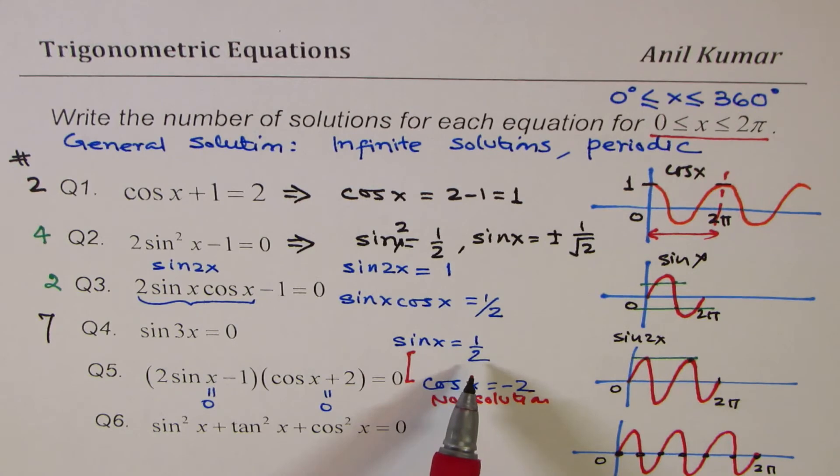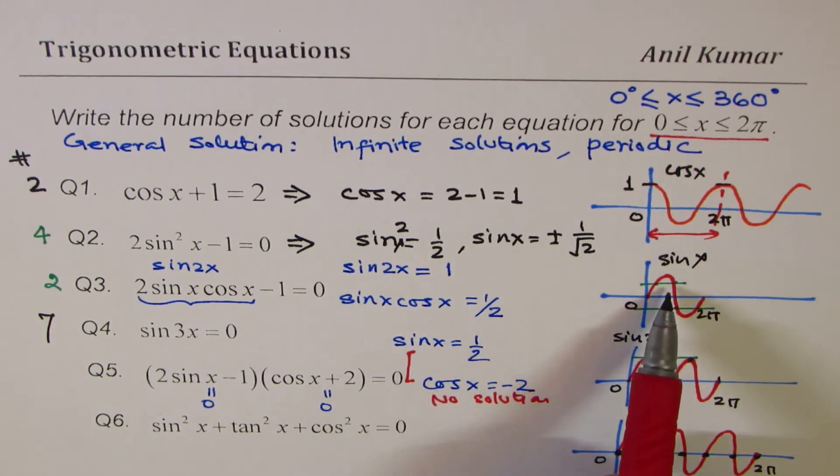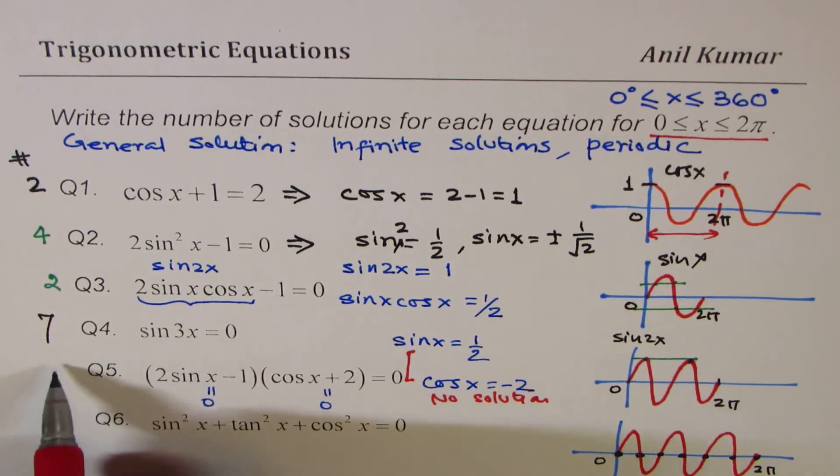We are left with only one factor which could give us a real solution. Here, sin x = 1/2 means a situation which we had just discussed earlier. Sin 1 wave in 2π, and there are two positions. So the answer for this will be 2.